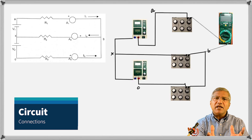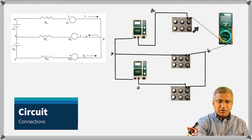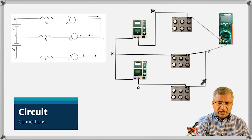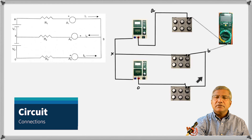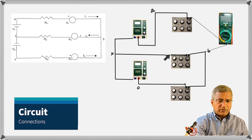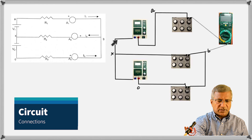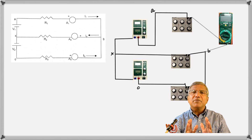To find I2, remove the multimeter from there, put this cable back, then remove the next cable and connect the multimeter there. Likewise, put that cable back and connect the multimeter across the third resistance. That's how we measure the currents.